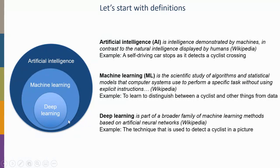Machine learning is a subclass of artificial intelligence. It's the scientific study of algorithms and statistical models that computer systems use to perform a specific task without explicit instructions. For example, teaching a machine to detect a cyclist from other objects purely through a data-driven approach — the algorithm learns itself how to distinguish a cyclist from rain, without being told to look for two wheels.